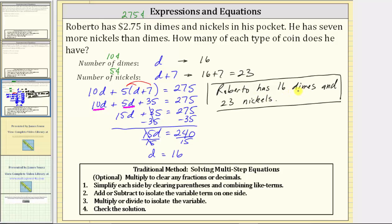Because each dime is worth 10 cents and each nickel is worth 5 cents, 10 cents times 16 or 10 times 16 plus 5 cents times 23 or 5 times 23 must equal 275 cents or just 275. 10 times 16 equals 160 plus 5 times 23 equals 115.